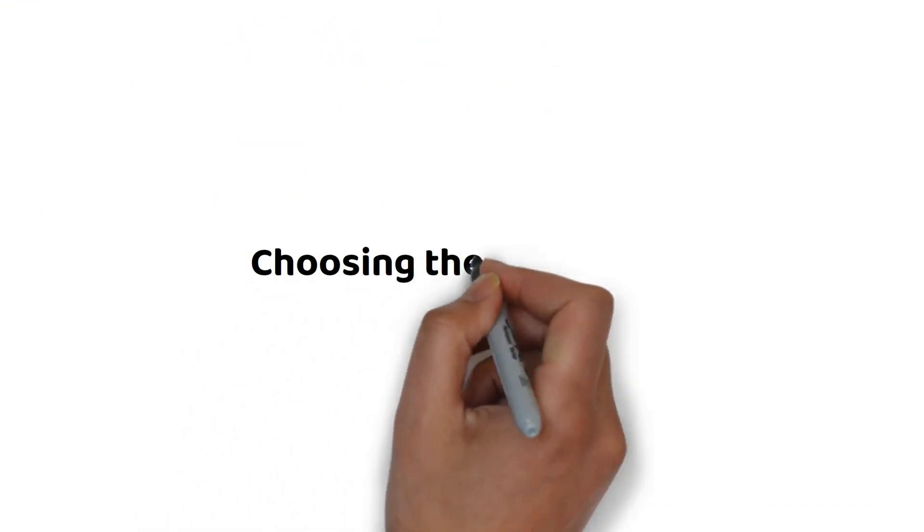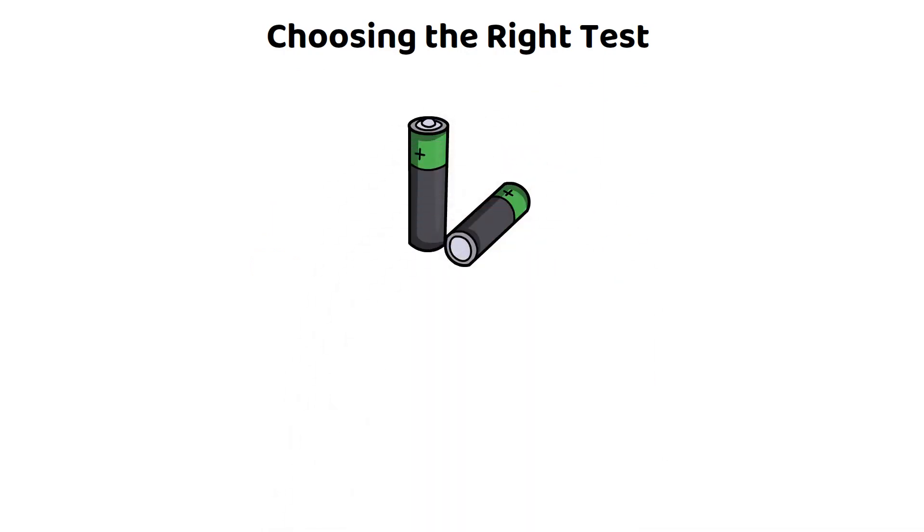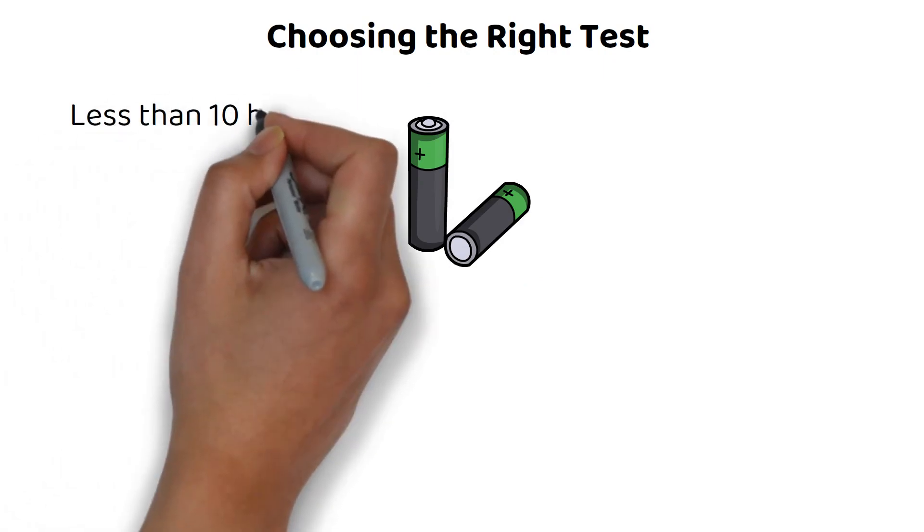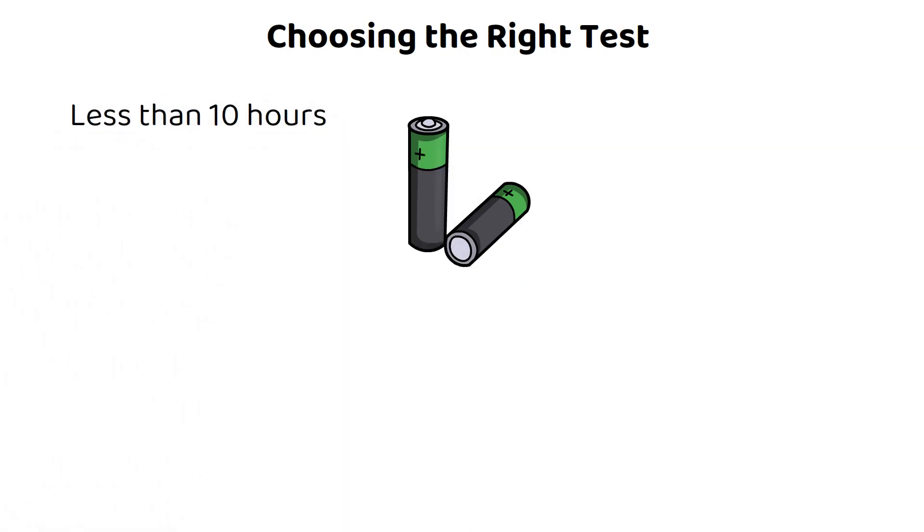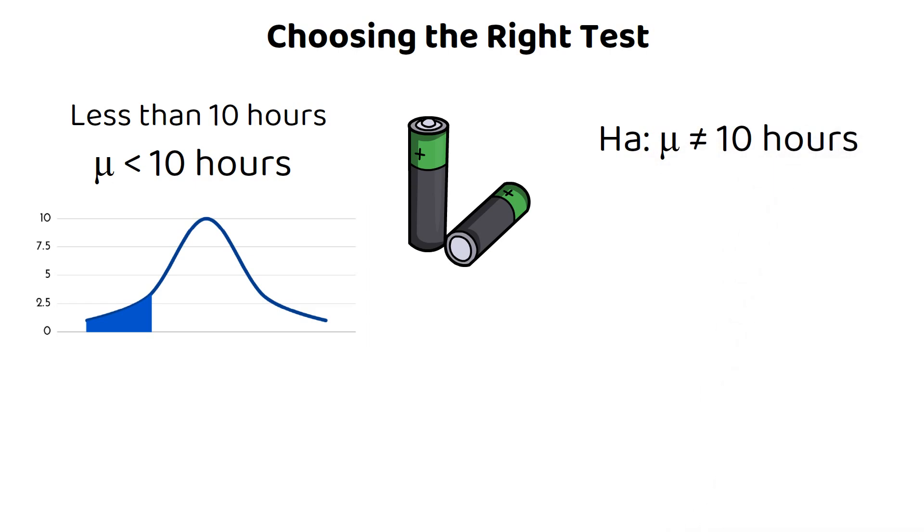Choosing the right test: Now, depending on our suspicion about the producer's claim, we can opt for a one-tailed or two-tailed test. If we suspect the batteries last less than 10 hours, our alternative hypothesis would be that the average is less than 10 hours, necessitating a one-tailed test. However, if we're just looking for any difference, either more or less, we'd use a two-tailed test with our HA of the average being not equal to 10 hours.